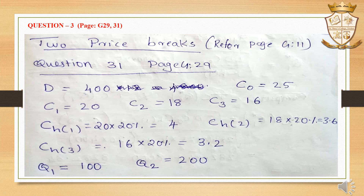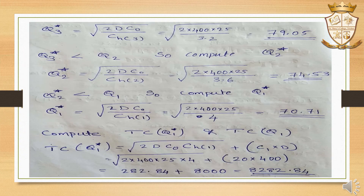Prices are C1 = Rs.20, C2 = Rs.18, and C3 = Rs.16. Holding costs CH1, CH2, CH3 are calculated as 20% of the respective unit costs. We calculate Q3 star = root(2·D·CO / CH3), then Q2 star = root(2·D·CO / CH2) = 74.53, which is less than Q2. Then Q1 star = root(2·D·CO / CH1) = 70.71.